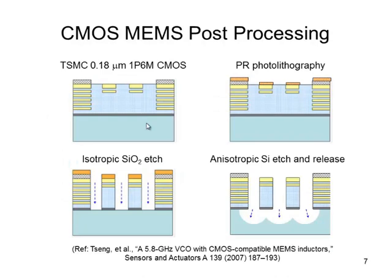This is the processing of this device. We use TSMC 0.18 micron 1P6M CMOS process. After we get this from the fab, there is photoresist lithography to define the moving structures.